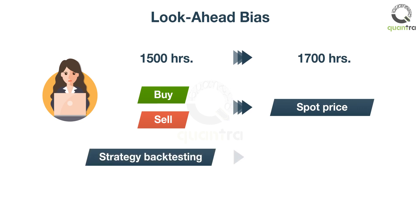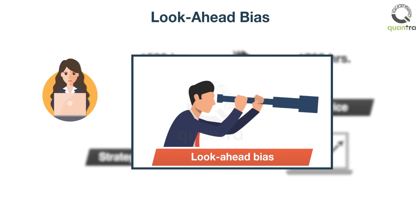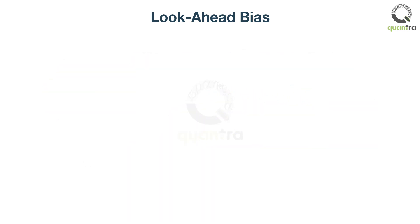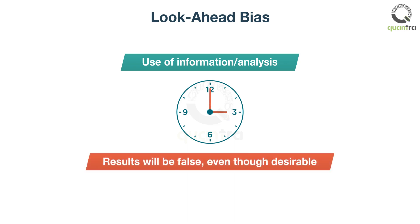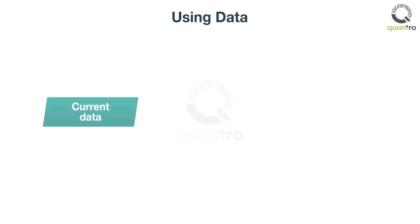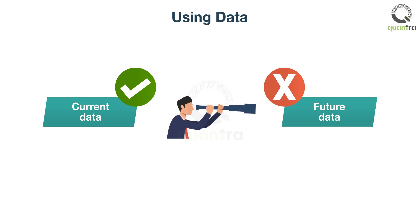Thus, her backtest showed excellent results with the use of information from the future. This is not possible in real trading. Anna had introduced a look-ahead bias in her strategy. Look-ahead bias is the use of information in analysis before the time it would have actually occurred. This gives false, often desirable, results in backtests and simulations. There is always only a certain set of data available at any given point in time, and we need to make sure we are not using data that will only be available in the future.